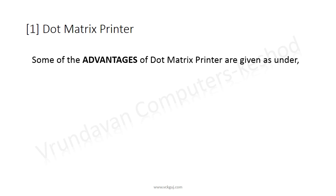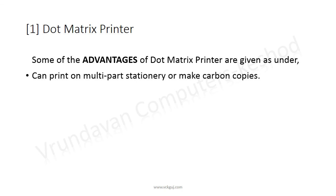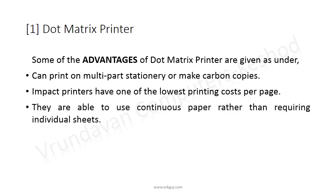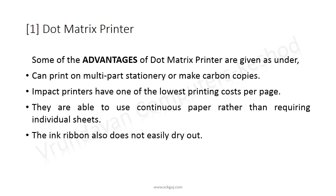Some advantages of dot matrix printers: they can print multi-part stationery or make carbon copies. Impact printers have one of the lowest printing costs per page. They are able to use continuous paper rather than requiring individual sheets. The ink ribbon also does not easily dry out.